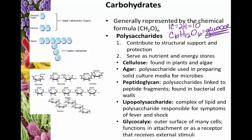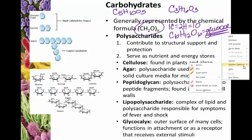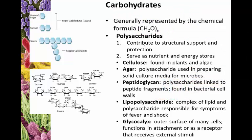Glucose would be what we call a hexose — meaning it has six carbons. There are also pentoses (C₅H₁₀O₅) and trioses (C₃H₆O₃), all following the same generalized formula. Polysaccharides have two main functions within the cell: they contribute to structural support and protection — the basis of sugars used in cell walls — or they serve as nutrients and energy stores, as in glucose going through cellular respiration.